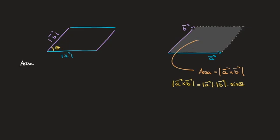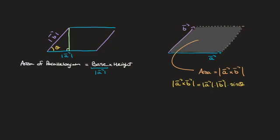The area of a parallelogram equals its base times its height. Looking at the parallelogram, if we say the blue side length is its base, then its length equals the magnitude of vector a — so the base is the magnitude of vector a. The height is equal to the length of the perpendicular projection of this vertex onto the base. That's the length of this green line segment here, which is perpendicular to the base, and I'll call that h. So the area equals the magnitude of a times h.